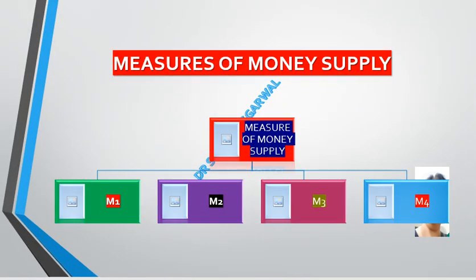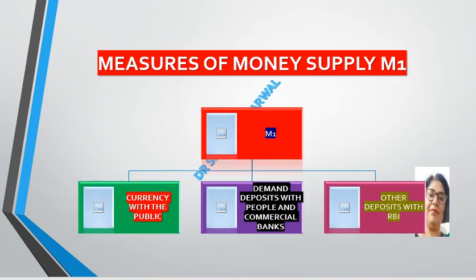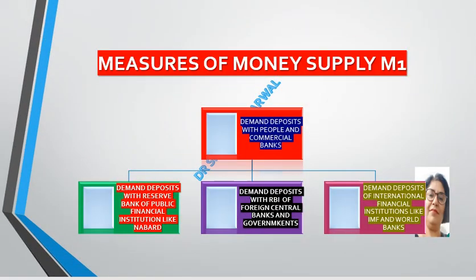There are four alternative measures of money supply: M1, M2, M3, and M4, which will be explained in other lectures. M1 is currency with the public, demand deposits with people and commercial banks, and other deposits with the RBI — including demand deposits of foreign central banks, governments, and international financial institutions like the IMF and World Bank. The rest will be covered in the next video.